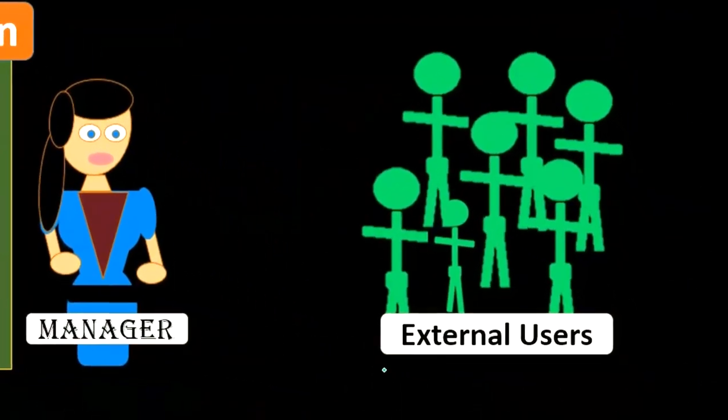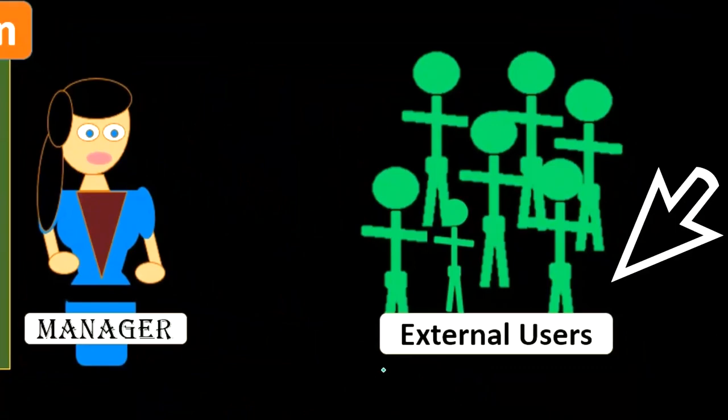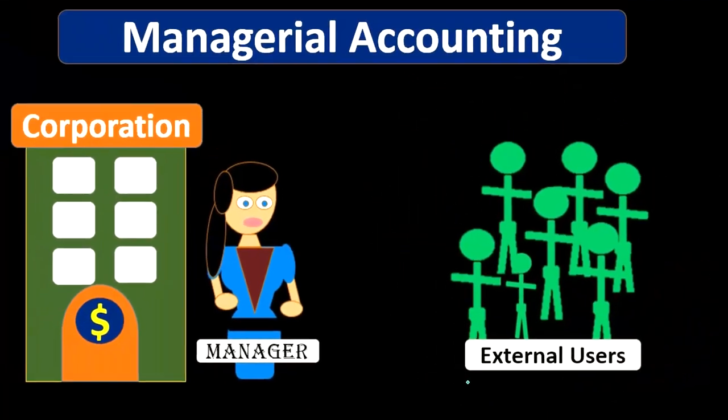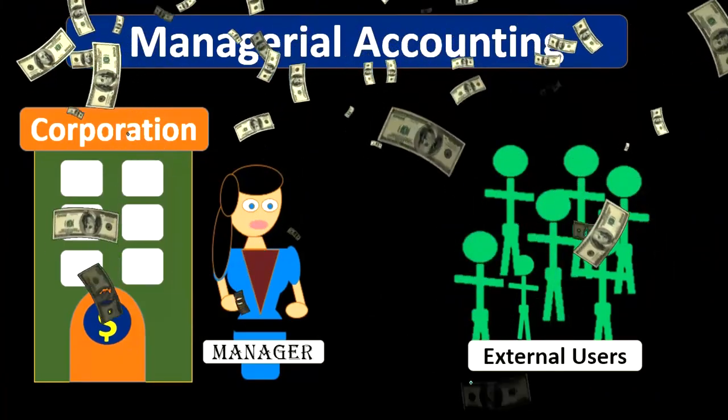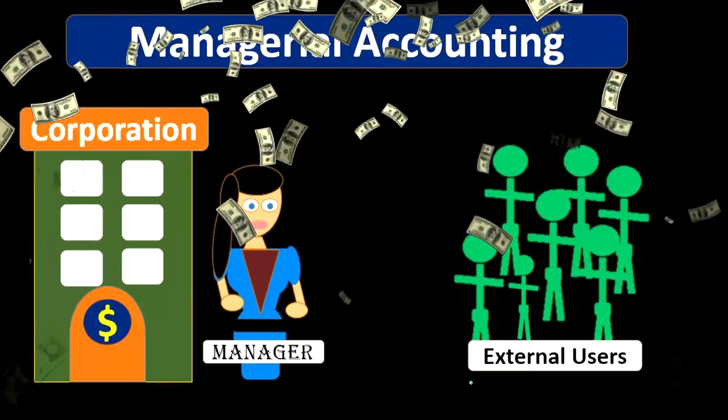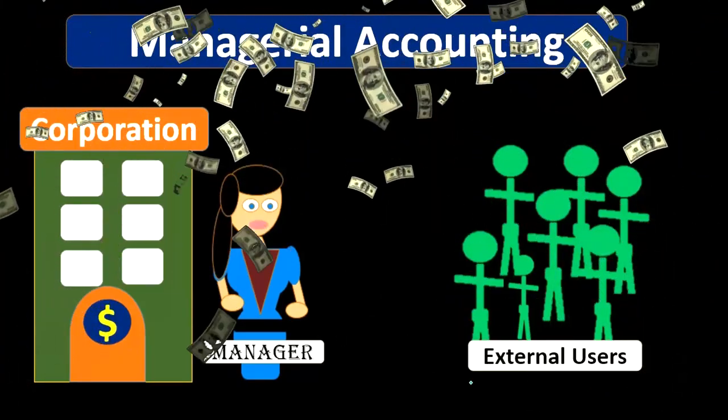So when we make the financial statements, when we think about financial accounting, everything that we put together is really geared towards the eyes and the objectives and the goals of external users — people like investors, people like creditors. They're not designed necessarily or ultimately solely for the primary purpose of management.